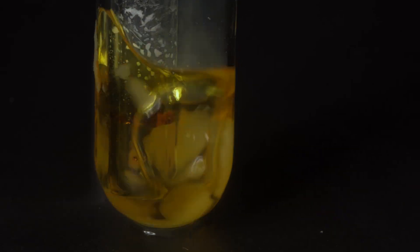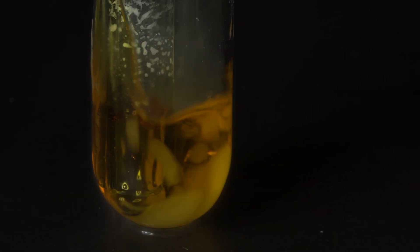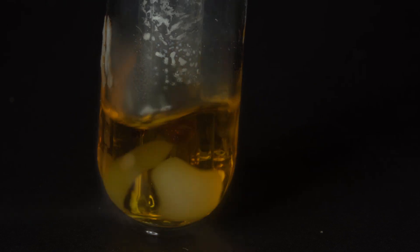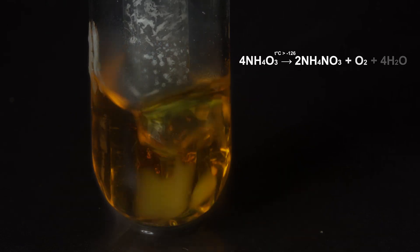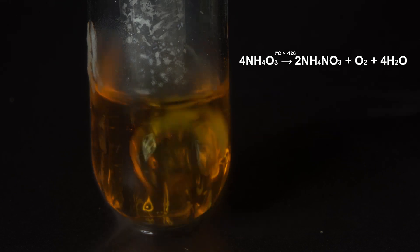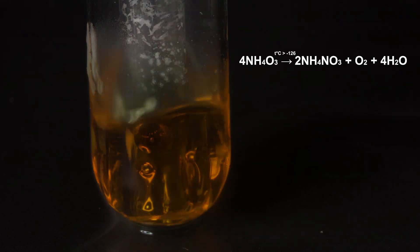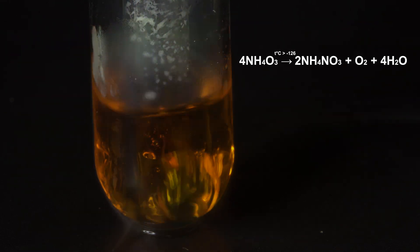Ammonium ozonide is a very unstable compound, and it decomposes at temperatures above minus 126 degrees Celsius into ammonium nitrate, oxygen and water, which enhances the decomposing process. You can see it right now due to a rapid discoloration.